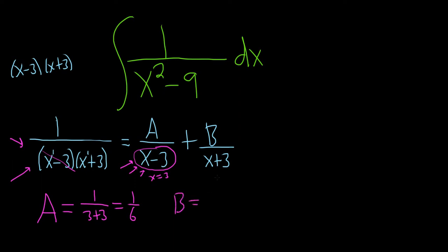Let's find B. So to find B, you look at what's under B. You say, okay, what makes this piece undefined? Or what makes the bottom 0? So negative 3. Negative 3 creates a problem. So you go over here to the left and you cover up the x plus 3. So I'll cover it up with yellow. Boom. And then you plug in negative 3 everywhere else. So we'll get 1 over negative 3 minus 3. And this is negative 1 over 6.